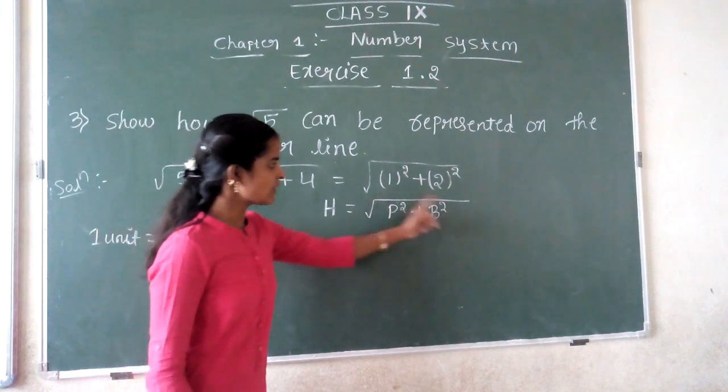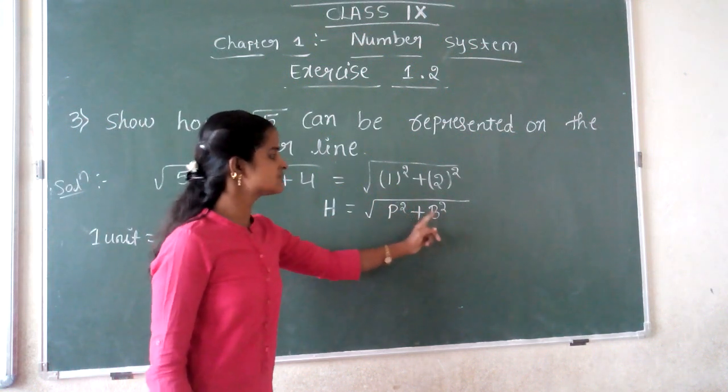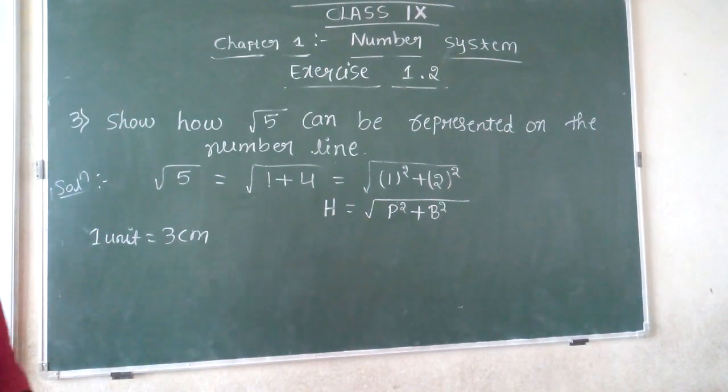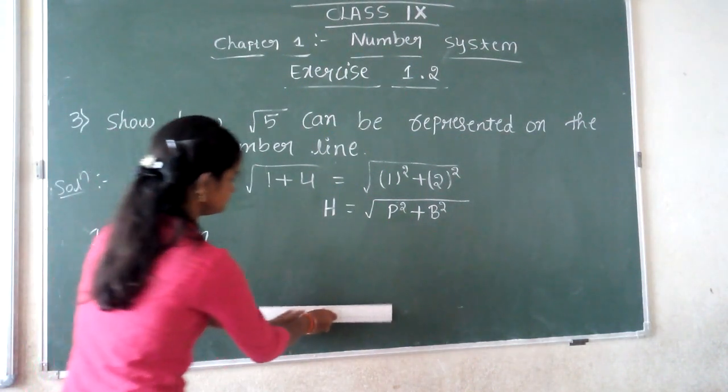The hypotenuse equals the square root of 1² plus base². To draw √5, first you will draw a straight line.